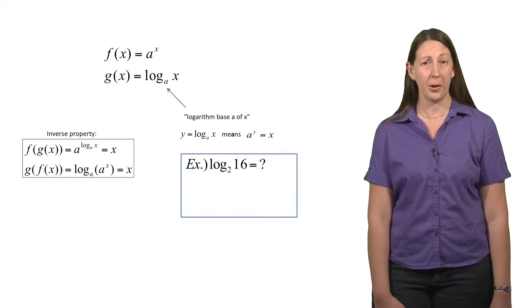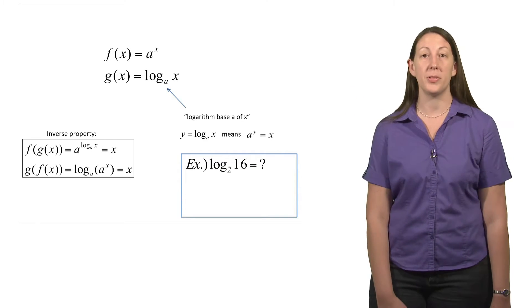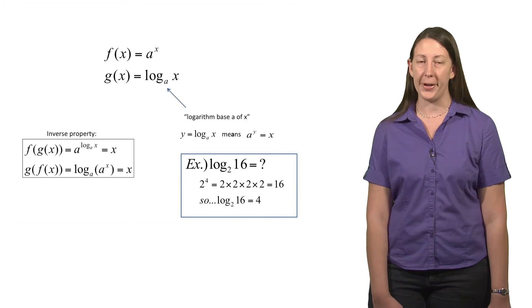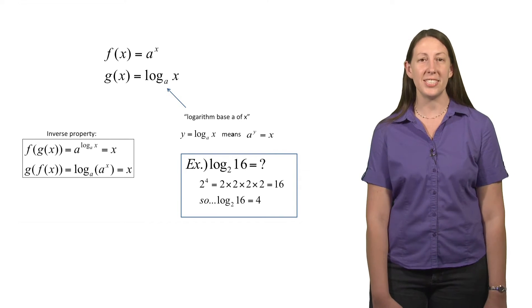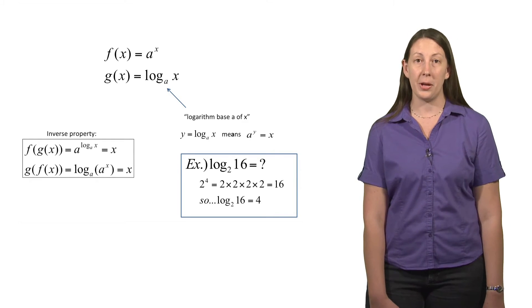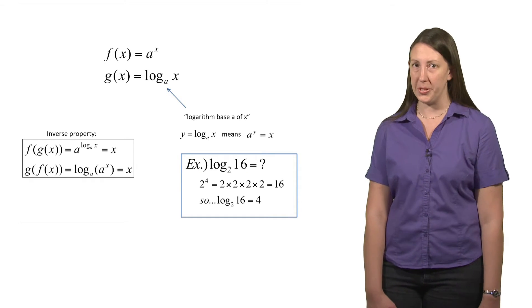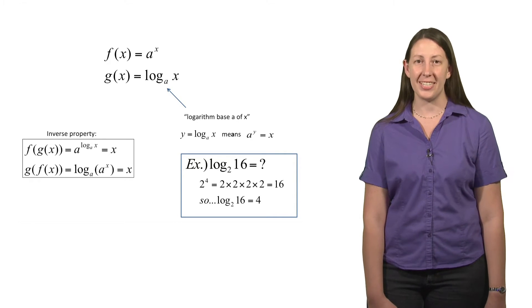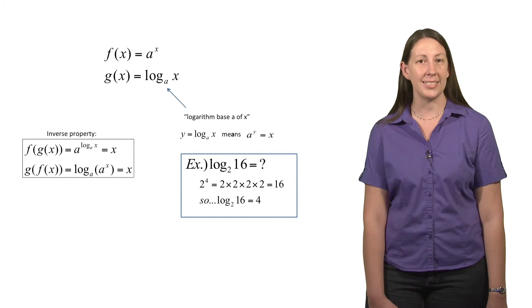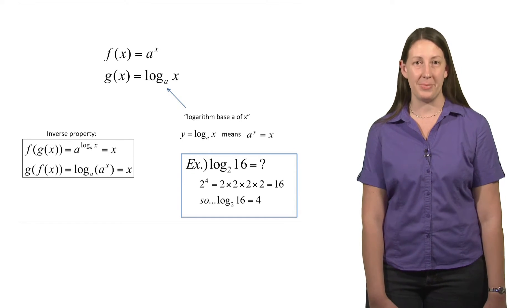Let's do a quick example so you can see how the log works, because with different bases, sometimes this can be new to students. For example, what if I wanted to compute the log base 2 of 16? First, I'm going to notice to myself that 2 to the fourth power, or 2 times 2 times 2 times 2 is just equal to 16. So 2 raised to the fourth power is 16. In other words, log base 2 of 16 is asking the question, what power do I need to raise 2 to, to get 16? And the answer is 4, because 2 raised to the fourth power gives me 16. So you can see logarithm is kind of asking the inverse question of, what power do I need to raise the base to, to get the quantity that I'm taking the logarithm of?